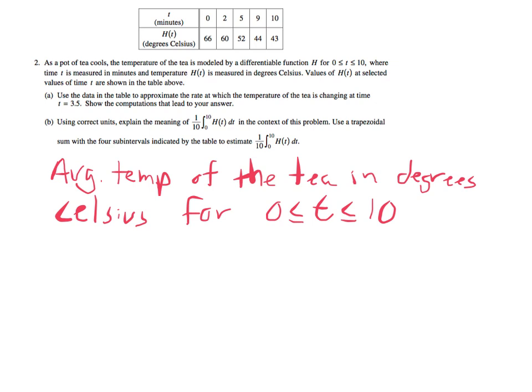And then use a trapezoidal sum with four subintervals indicated by the table to actually estimate this average value. So when we do a trapezoid, we know that the area of a trapezoid is 1 half base 1 plus base 2 times the height. So just to write out all the work that I'm actually going to be doing here, we have 1 half for the first interval. That's going to be 66 plus 60 times the height 0 to 2. Now just to make sure we're clear, the function values are the two bases and the height is actually the change in X. In a trapezoid, the two bases must be parallel. So those are the two Y values on the graph as we go up the curve.